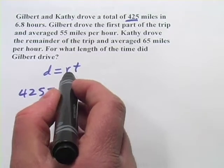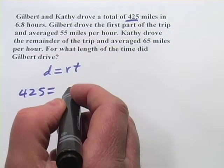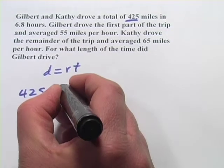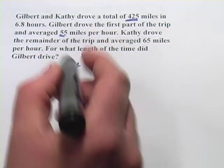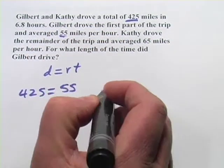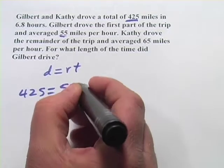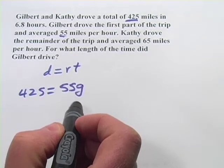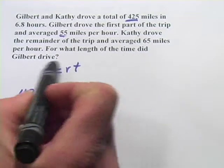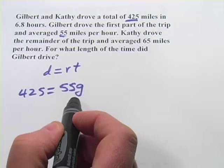So the rate and time of Gilbert plus the rate and the time of Kathy. So when Gilbert drove, he drove at a rate of 55 miles per hour. So 55. And we're going to multiply that by, let's call G, Gilbert's time that he spent driving. And that's good because we want to find the length of time Gilbert drove. So we're going to end up solving for G.